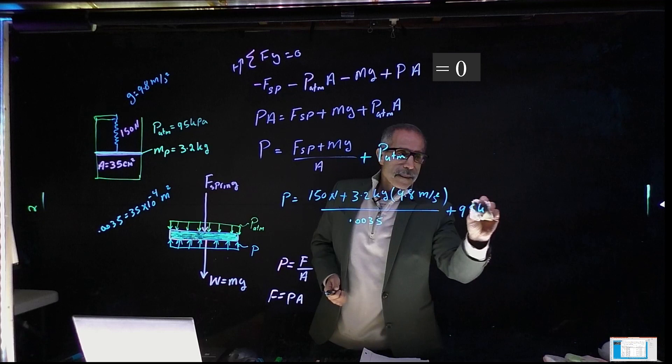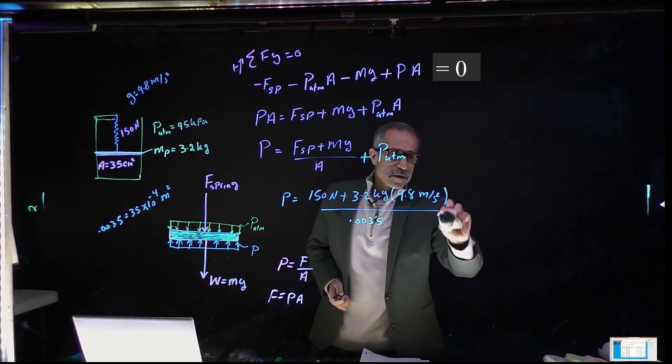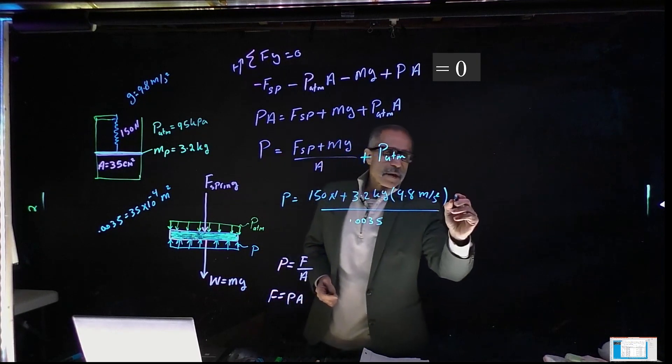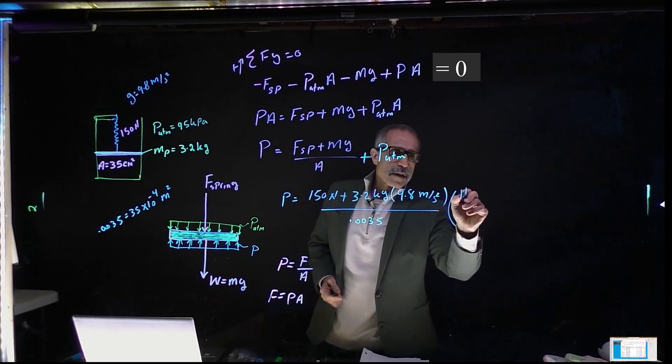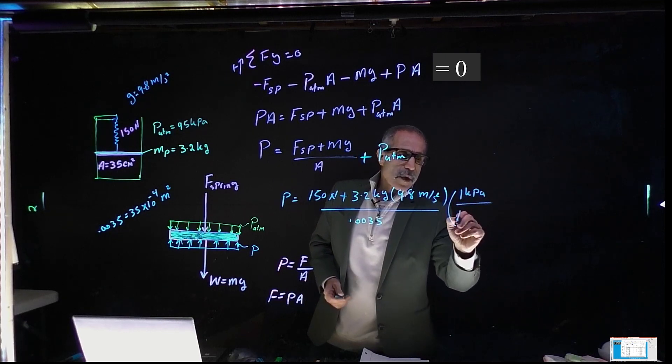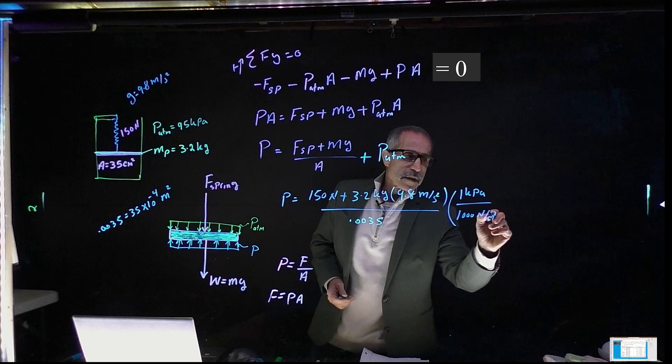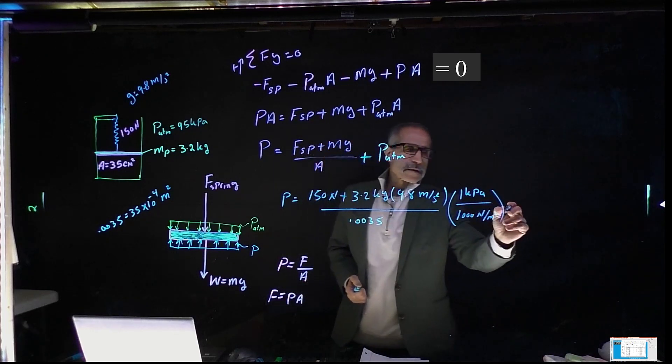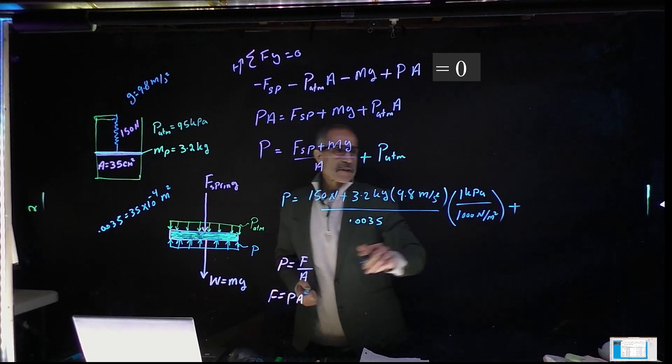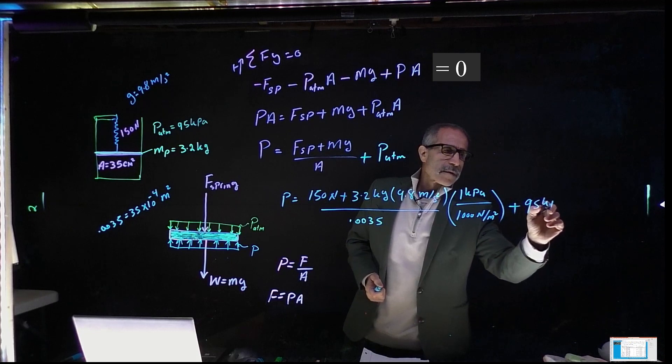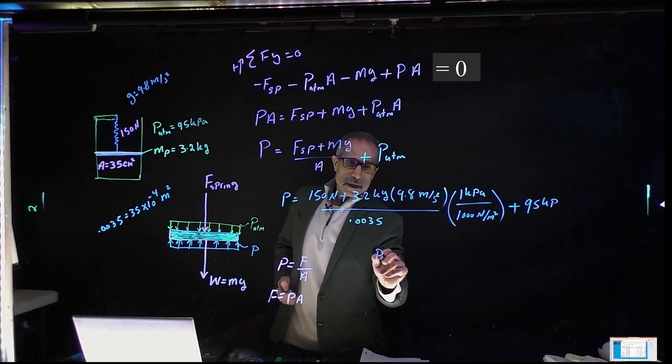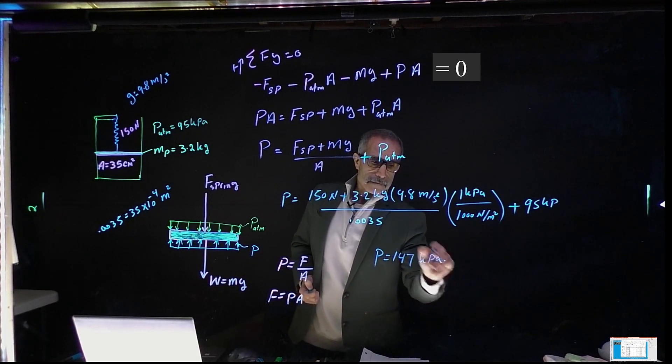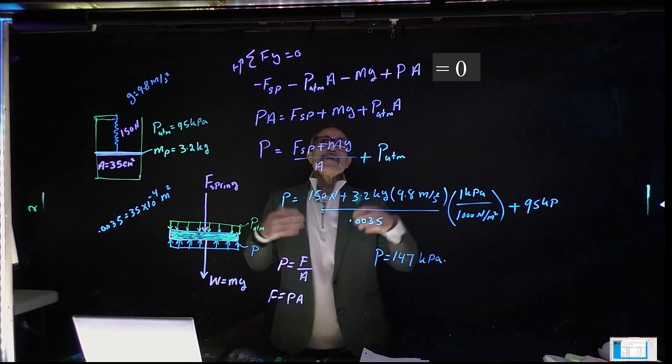Plus, p of atmosphere was given to us as 95 kilopascal. Before I do that, I want to convert these Newtons to kilopascal. So I'm going to multiply by 1 kilopascal is the same as 1,000 Newtons per meter squared, because 1 pascal equals Newton per meter squared. Now I can go ahead plus 95 kilopascal. So the answer is going to come out to 147 kilopascal. Great.